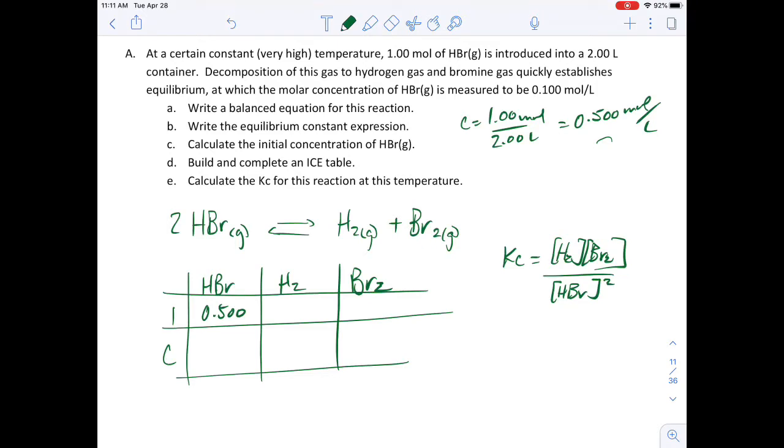Decomposition of this gas to hydrogen gas and bromine gas quickly establishes equilibrium at which the molar concentration of hydrogen bromide is measured to be 1.00 mole per liter.